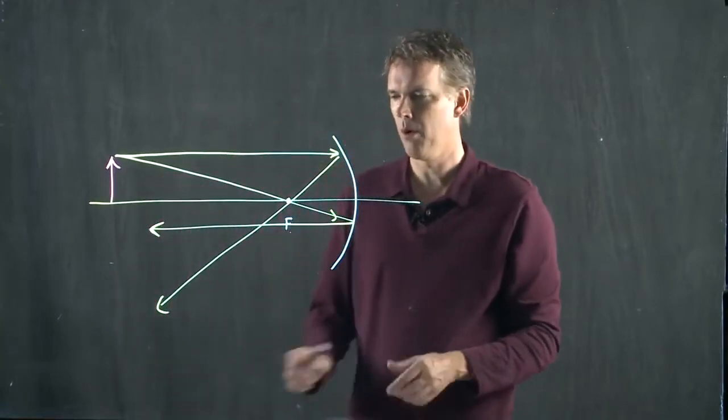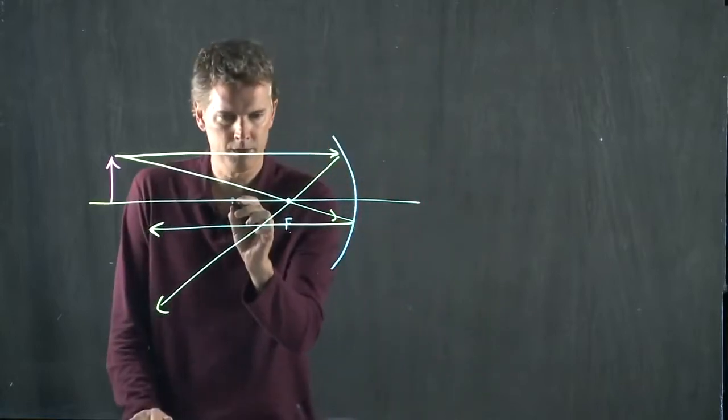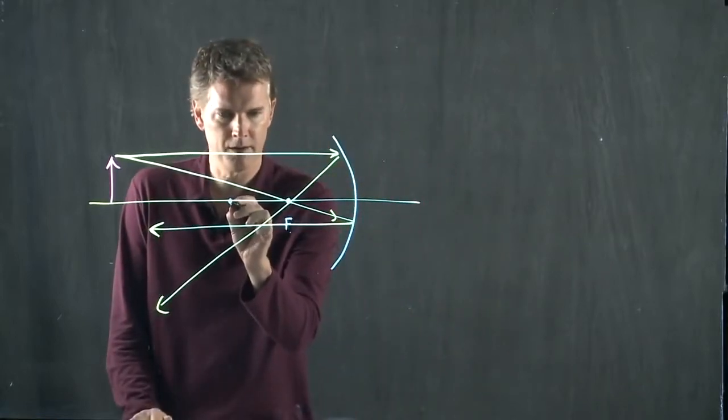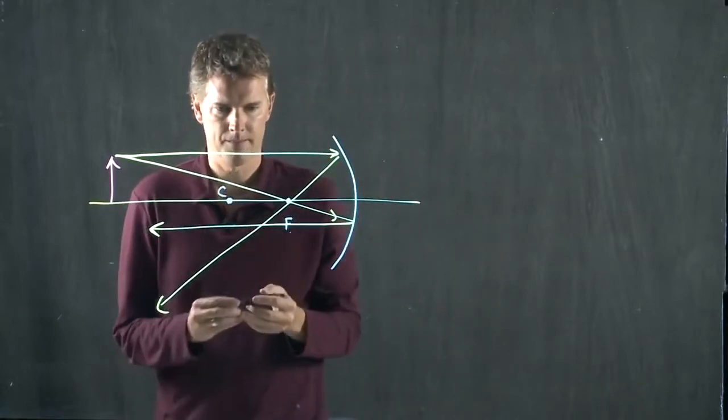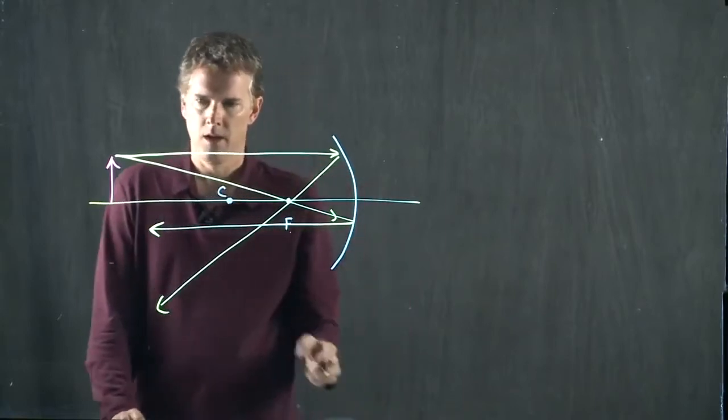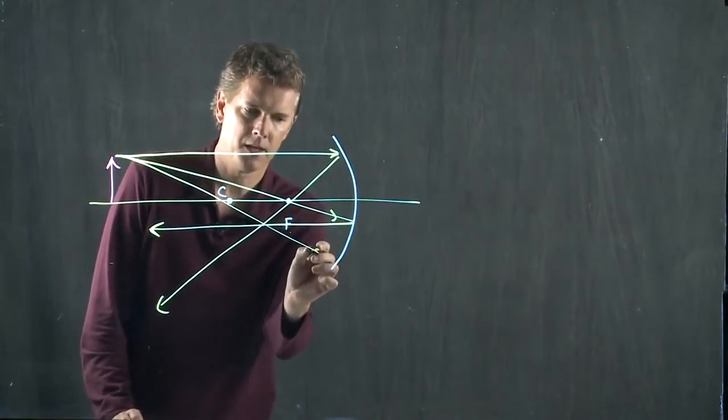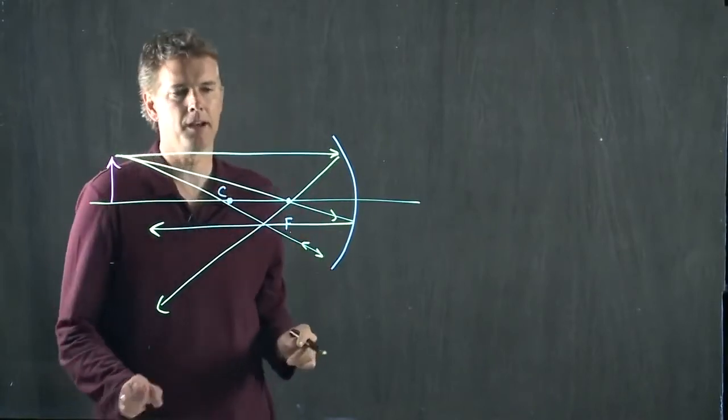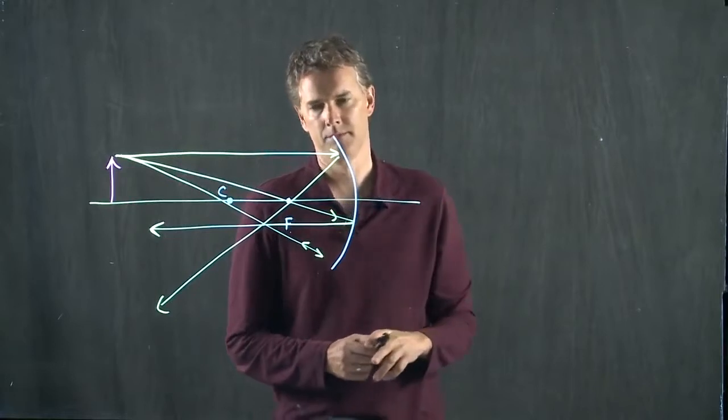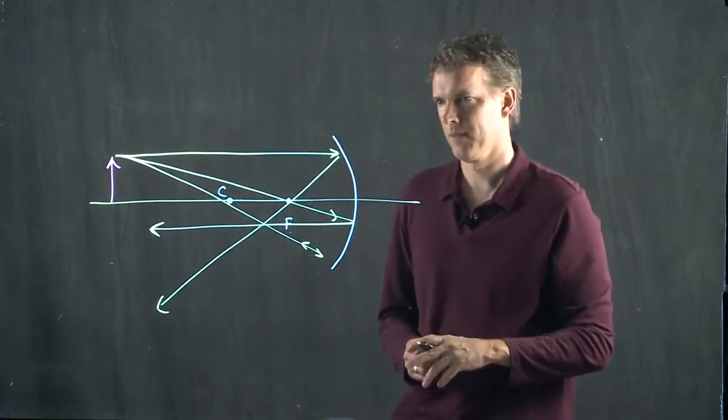And there's one more point, which is the following. If the center is there, then rays that come through the center just keep going, bounce off the mirror, and come back on themselves.